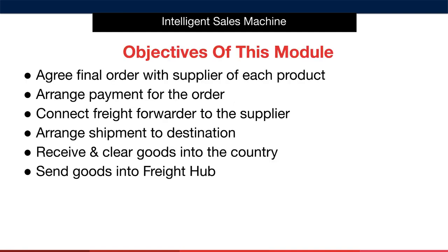Let's take a moment to review this module's objectives and discover what you're about to learn. The first objective, once you have your business entity in place, is to agree your final order with your supplier for each product. This involves confirming the quantity, pricing, and so on. Once you've done that, you're going to arrange payment for the order and then immediately connect your freight forwarder to the supplier. This is a very important step that I'll repeat throughout this module. So many sellers wait until their order is complete to speak to a freight forwarder — this quite simply is the wrong way to go about things, as you'll see when we dive into that part of the module.